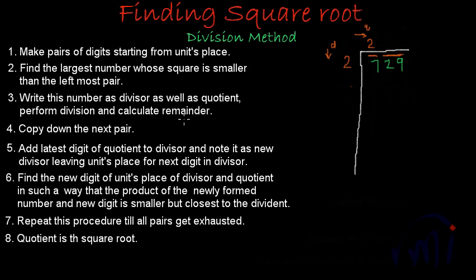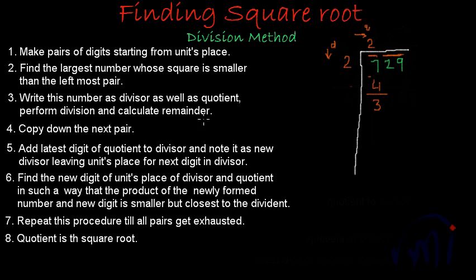Now perform the division and calculate the remainder. We multiply the divisor by the quotient — 2 times 2 is 4 — and then find the remainder. 7 minus 4 is 3. So we have performed the division and calculated the remainder.